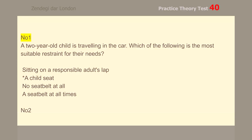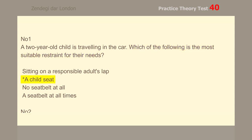Number 1. A two-year-old child is traveling in the car. Which of the following is the most suitable restraint for their needs? A child seat.